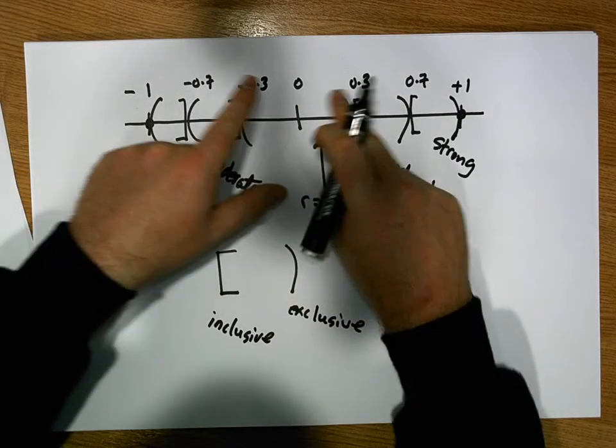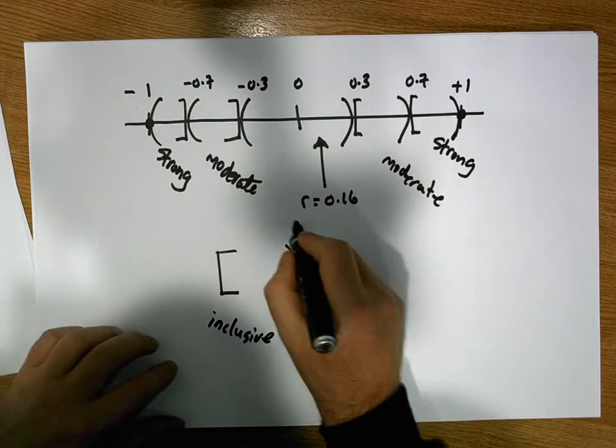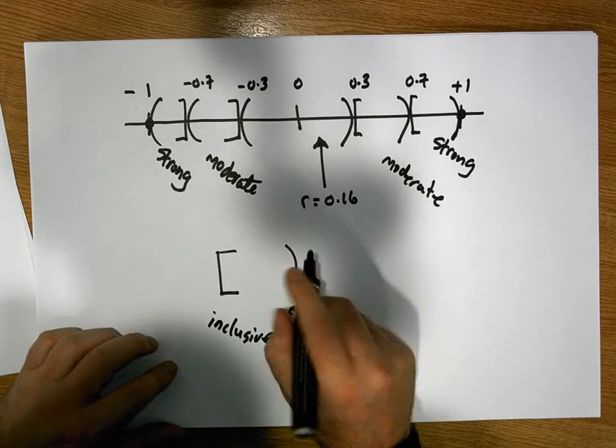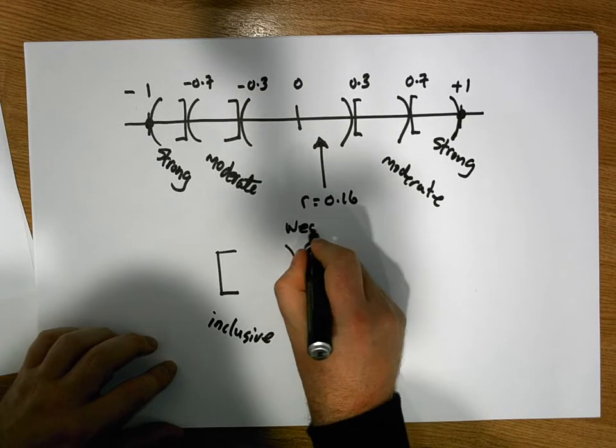And for our purposes here, we say that there's a weak association if it's between minus 0.3 and plus 0.3. That is a weak association.